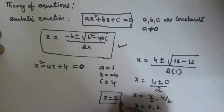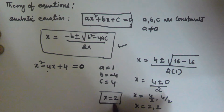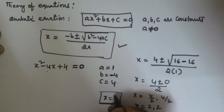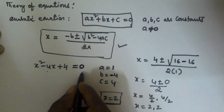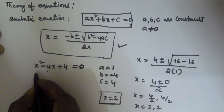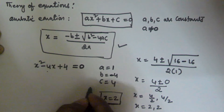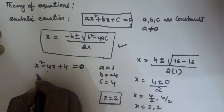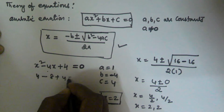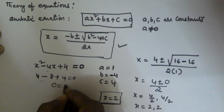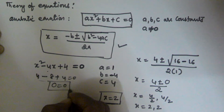The root of this equation is x = 2. We substitute this back: 2² − 4×2 + 4 = 4 − 8 + 4 = 0, which equals 0. So both sides satisfy the equation, confirming x = 2 is indeed the root.